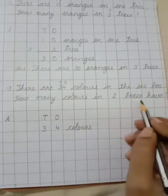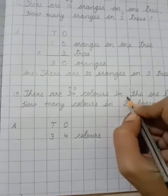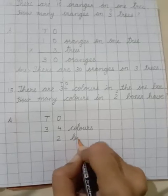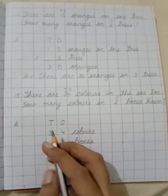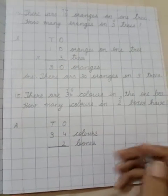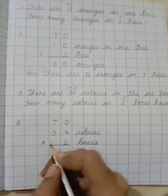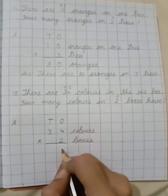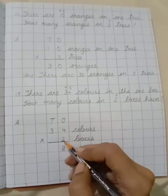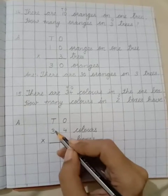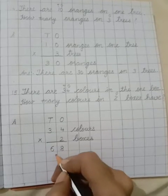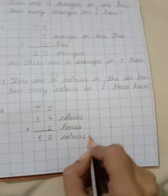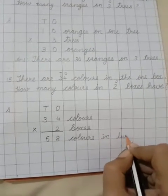How many colors in two boxes? Then two is the ones, so two we will write in ones column. Two — what are they? Boxes. So here we will write boxes. Now here we have to find out how many colors in two boxes, so we will put a multiplication sign. First we have to multiply in ones column: two fours are eight, so eight we will write in ones column. Now we have to multiply with tens column: two threes are six, so six we will write in tens column.